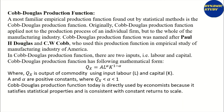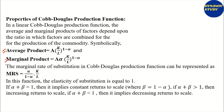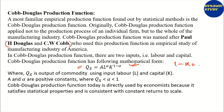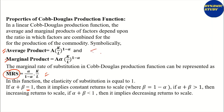Then we have the Cobb-Douglas production function, named after these two economists, who made this production function by observing the manufacturing sector of America. This is how the production function looks: Q is the output, L and K are labor and capital, and A and alpha are positive constants. We can find the average product and marginal product by applying the formula, and from the formula we can also get the marginal rate of substitution.